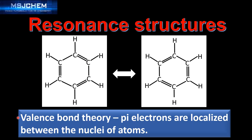Resonance structures are a feature of the valence bond theory. In the valence bond theory, the pi electrons are localized between the nuclei of atoms. That means the pi electrons which form this carbon to carbon double bond are localized between these two carbon atoms.